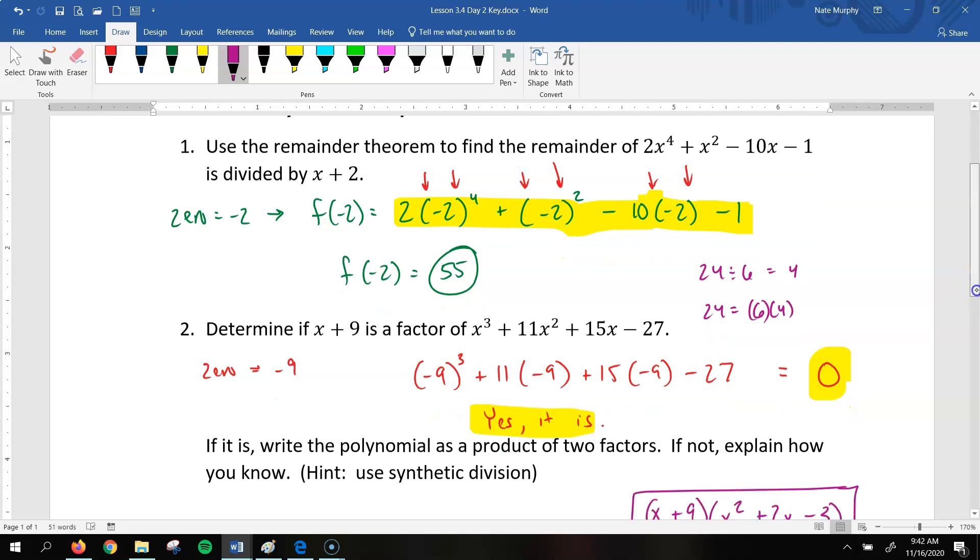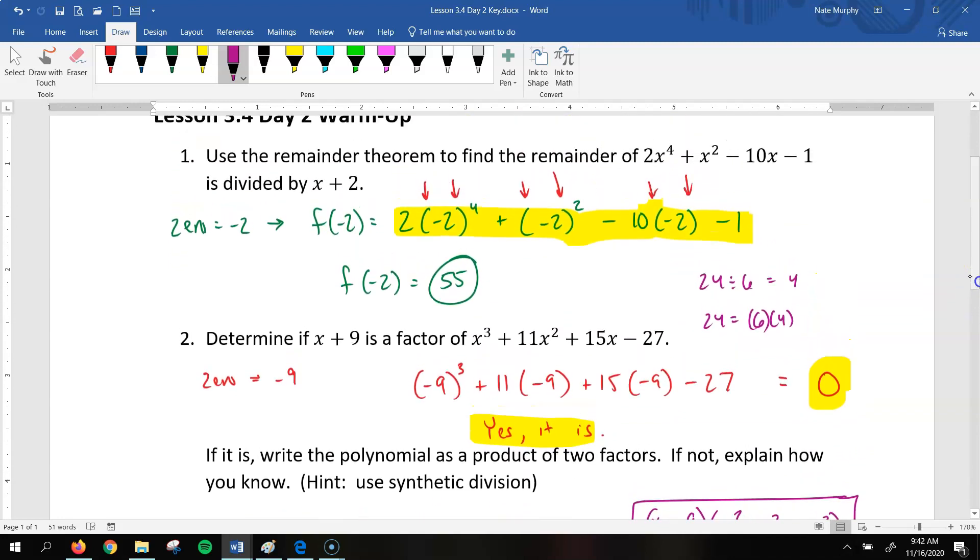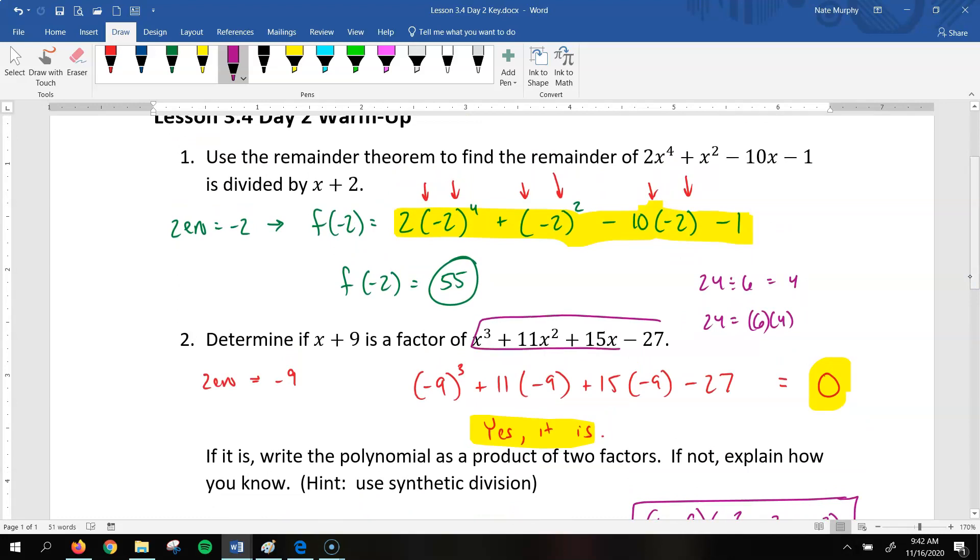So here's what we just found. We just found that when we divide, if we were to divide this polynomial by x plus 9, x plus 9 would be a factor of it. So that means that this would be the same as x plus 9 times whatever we would get when we divide these two.